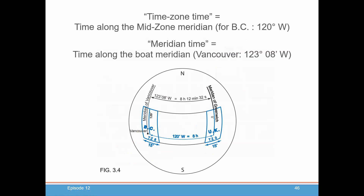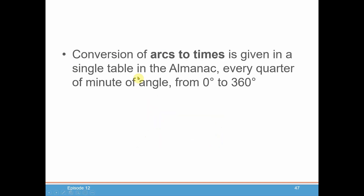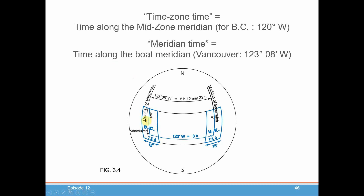There are a couple of different times we're talking about here. UTC time is the mean time at the meridian of Greenwich. Then we have zone time — the zone you happen to be sailing in — and that is the time along the mid-zone meridian. For example, in British Columbia that's 120 degrees west, and each zone is exactly 15 degrees apart. Local mean time, or meridian time, is the time along the boat meridian — not necessarily the meridian in the middle of the zone, but exactly where you are located.